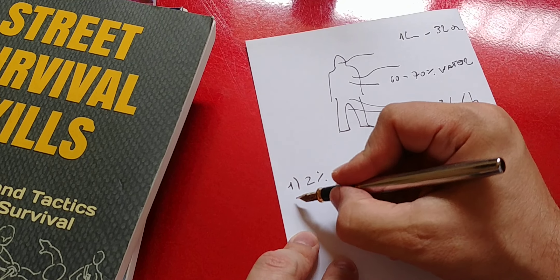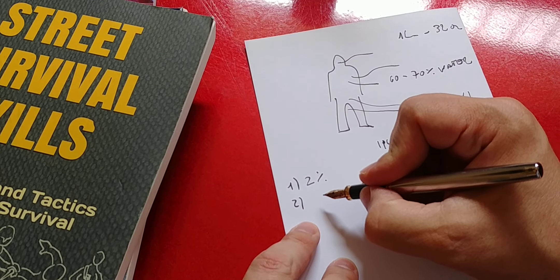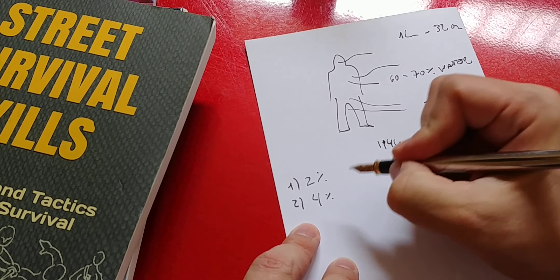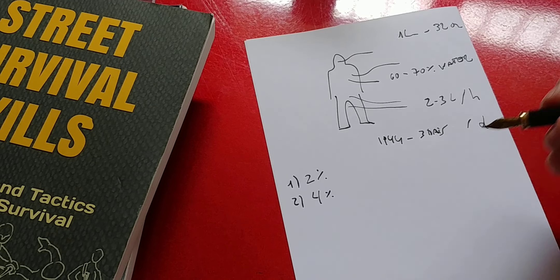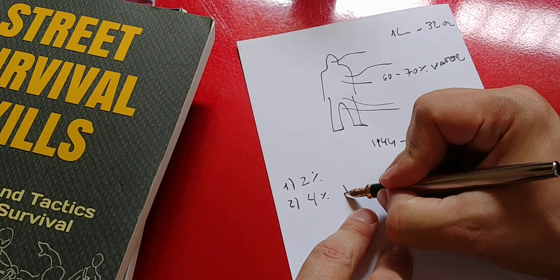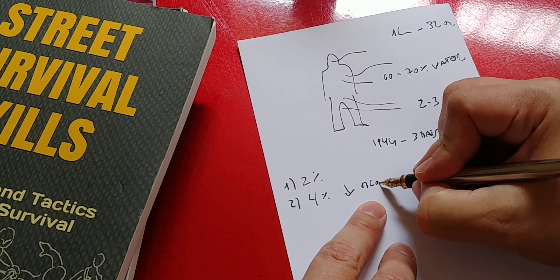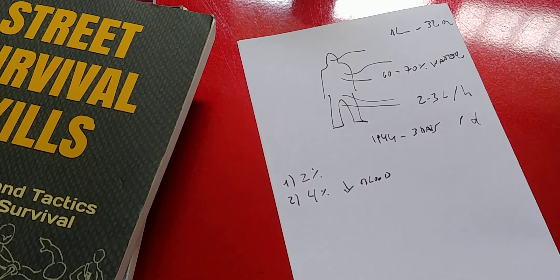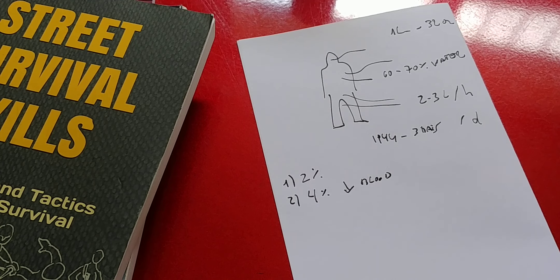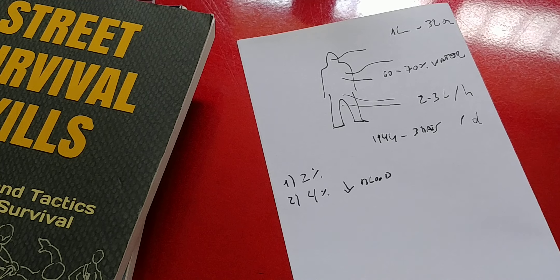In the second stage of dehydration, you're going to be losing about 4% of your body mass in water. And here is where you have a significant drop of blood pressure. Because again, less water in the system, less water in your blood, the pressure drops a lot and you may end up fainting because of dehydration.